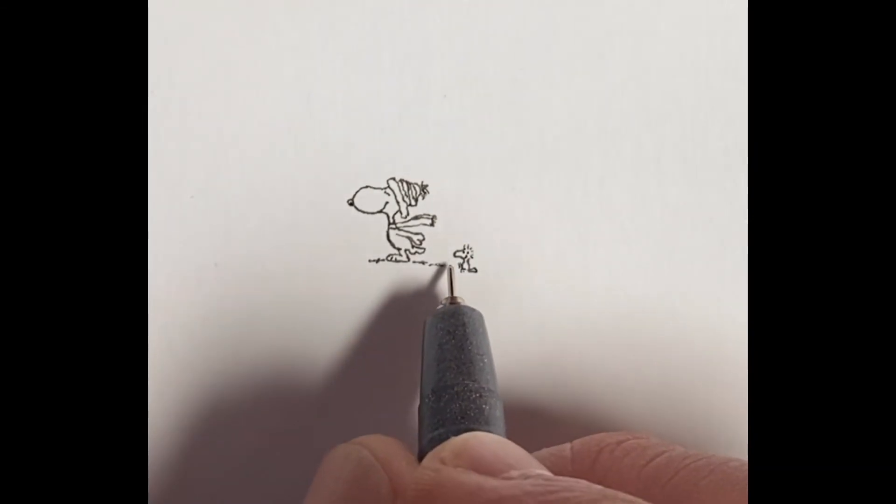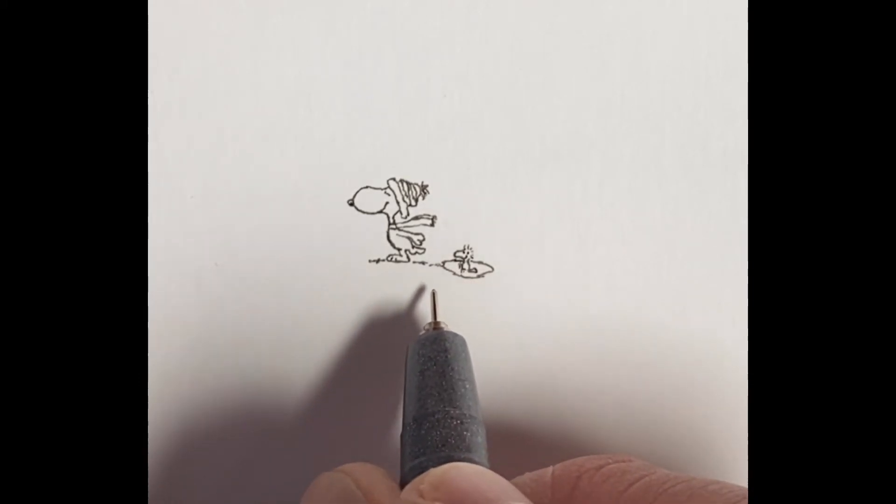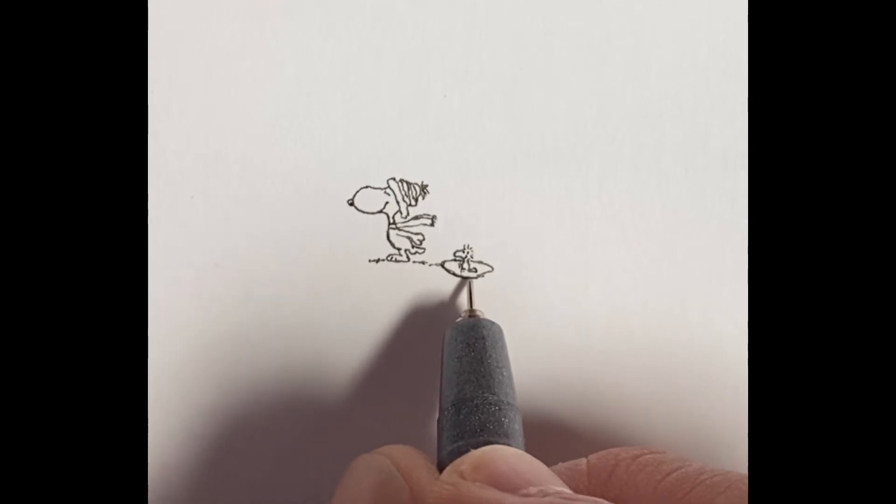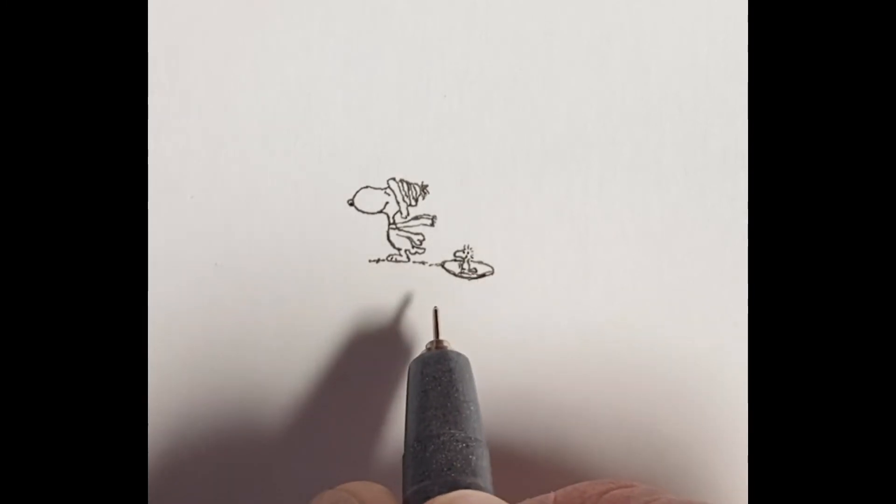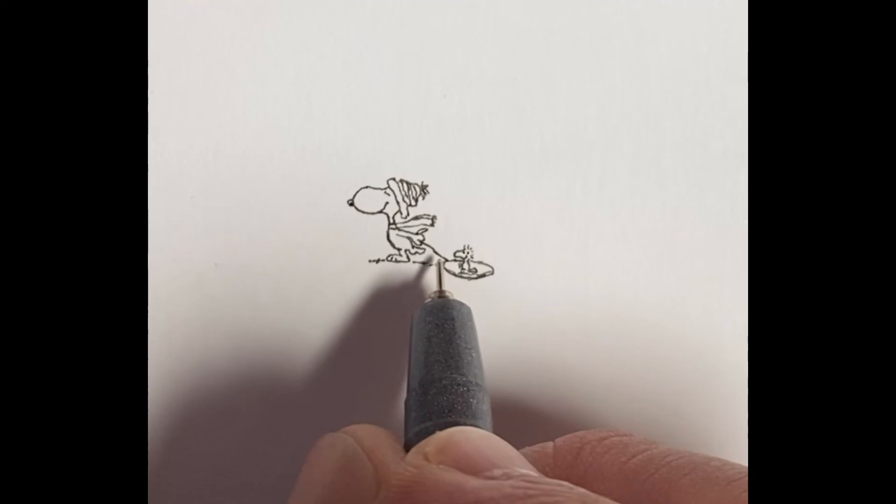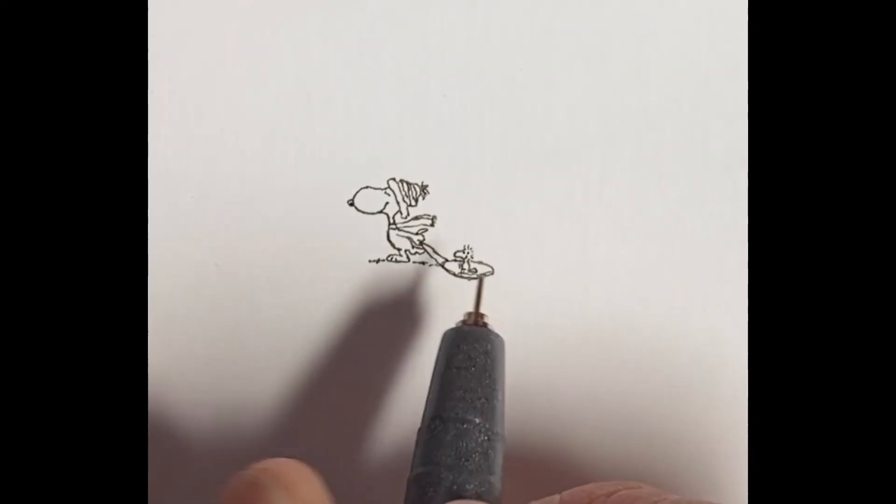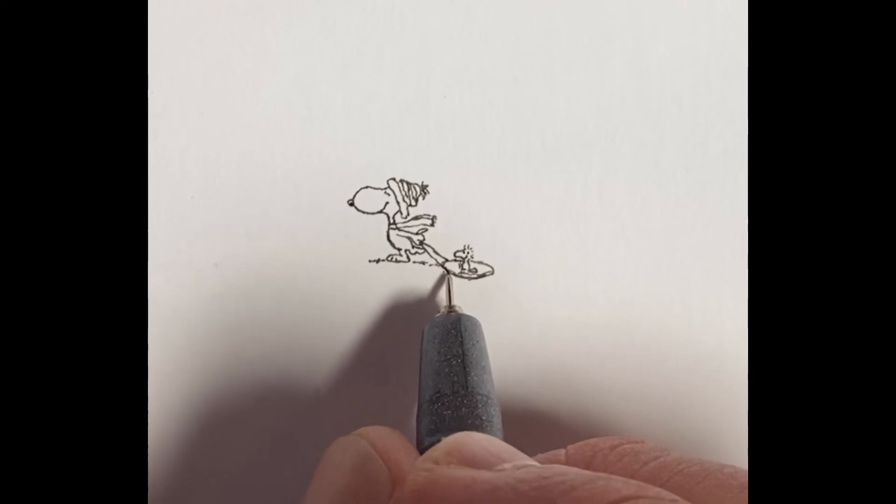So I've got Woodstock drawn out and then from there I'm going to put the kind of the saucer or sled around him, so just kind of creating that to fit him in it. And the string will be, there's a little loop above Snoopy's hand and then the two strings going down to the sled. And just getting that bottom of the sled in there.